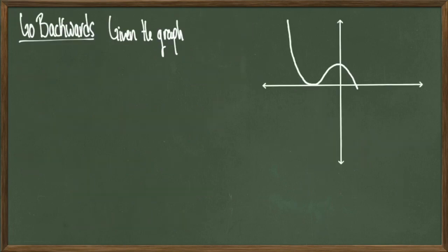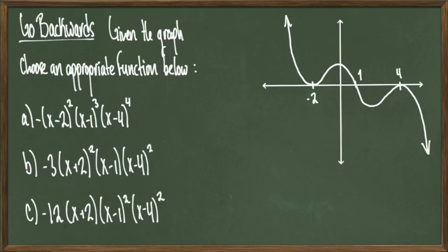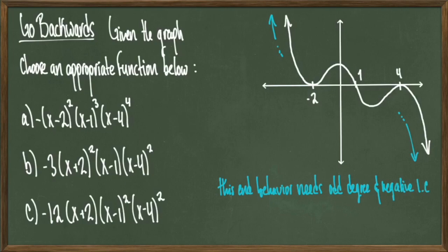For our last example, instead of graphing a polynomial we'll go backwards: we're given a drawing and a list of options A, B, or C, and we have to determine which polynomial could fit the graph. First, let's study the graph's end behavior. The left tail points up and the right tail points down, so the polynomial has odd degree and a negative leading coefficient. Option A has degree 2+3+4 = 9 (odd), leading coefficient -1. Option B has degree 2+1+2 = 5 (odd), leading coefficient -3. Option C has degree 1+2+2 = 5 (odd), leading coefficient negative. End behavior alone isn't enough, so let's look at the roots.